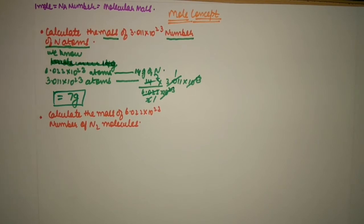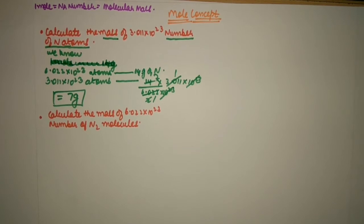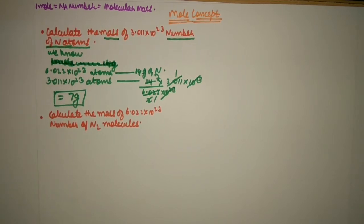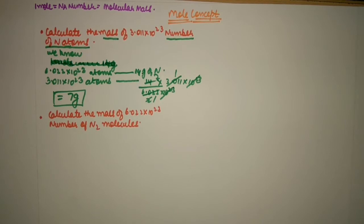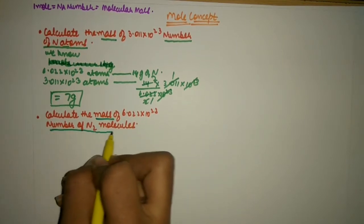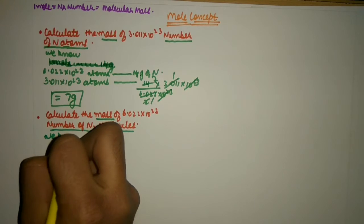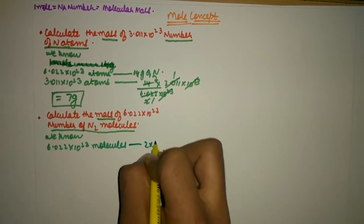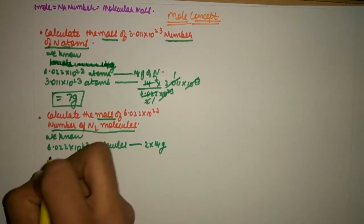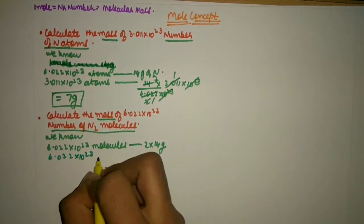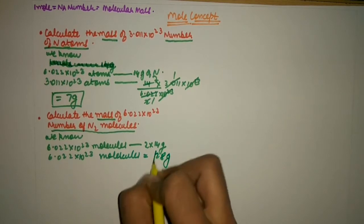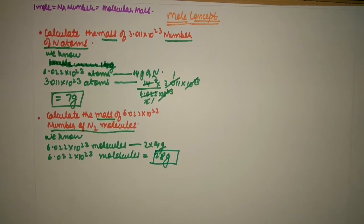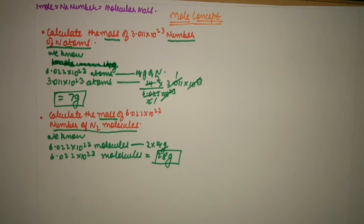So this is how we deal with these sorts of questions. The next question: calculate the mass of 6.022 into 10 to the power 23 number of N₂ molecules — nitrogen molecules. Nitrogen, hydrogen, oxygen all exist in diatomic state, so their molecules are N₂, H₂, O₂. In this question we have mass and number of N₂ molecules. We know 6.022 into 10 to the power 23 molecules are present in 2 into 14 grams. Since N₂ is given, we use 2 into 14 grams. They asked about 6.022 into 10 to the power 23, and that gives us 28 grams — 2 into 14 is 28. As simple as that. This is how we deal with these easy questions in a very easy way.